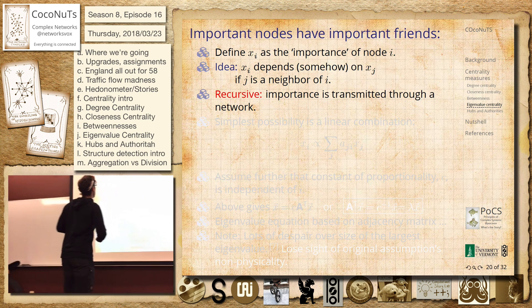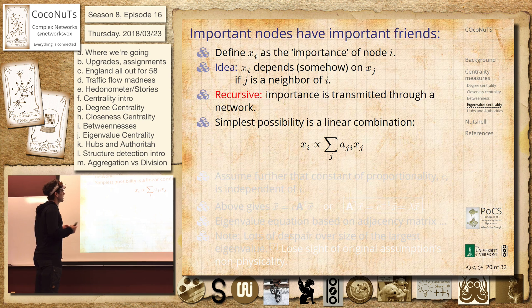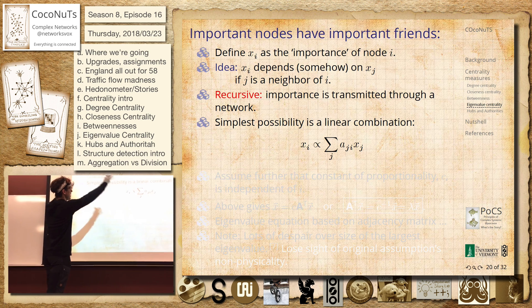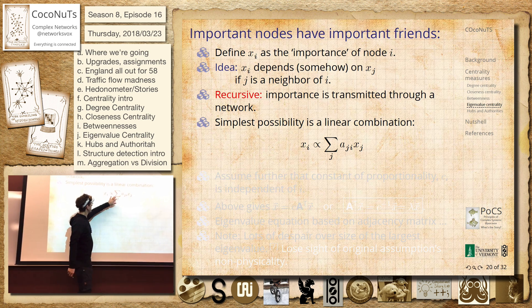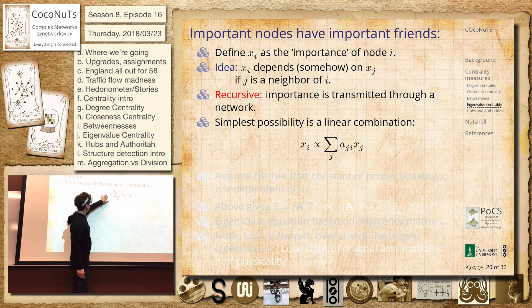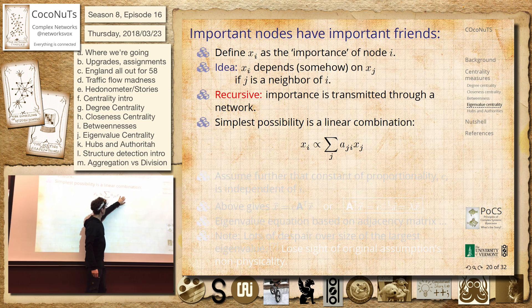It's transmitted through a network. And the simplest thing, this is something that could be, this is baked into so much but it's really forgotten about. Because eigenvalue centrality sounds fantastic. So the idea will be that the importance of node i is somehow proportional to its neighbors.